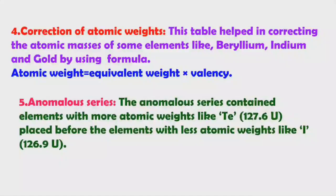The anomalous pairs contain elements with a higher atomic weight placed before an element with a lower atomic weight. For example, tellurium with atomic weight 127.6 unified mass is placed before iodine, which has atomic weight 126.9 unified mass. According to increasing atomic weight order, tellurium should follow iodine, but in Mendeleev's table, iodine follows tellurium.